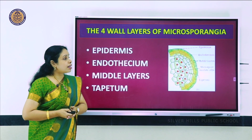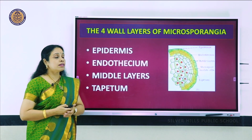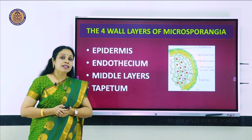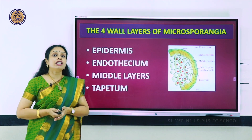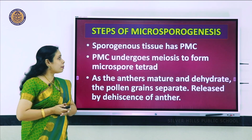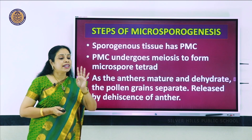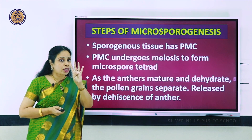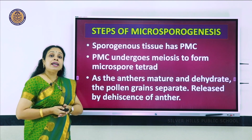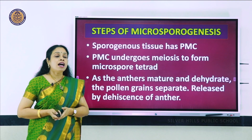The remaining three wall layers - the outer epidermis, endothecium, and middle layers - function to give protection. Later, when the anther is dry, they will dehisce and break to liberate the pollen grains. The sporogenous tissue has pollen mother cells which undergo meiotic division to form initially a microspore tetrad of four. As the anthers mature and dehydrate, the pollen grains separate, and when the anther dehisces, those pollen grains are released.